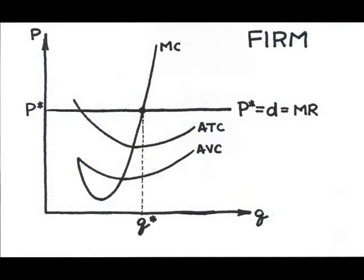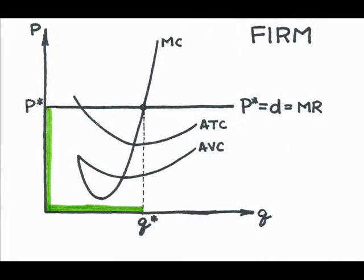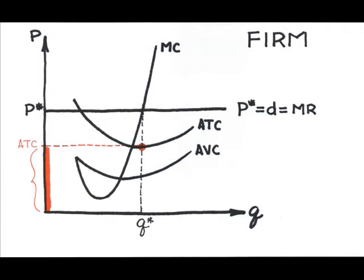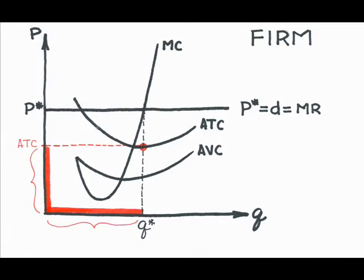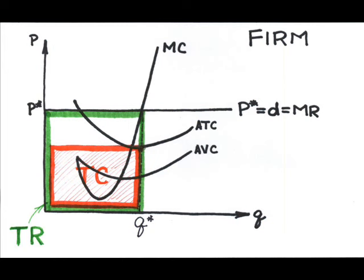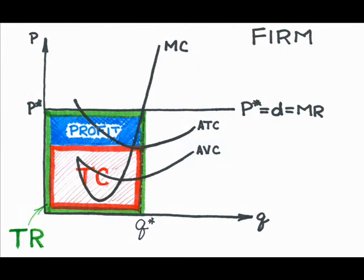At Q star, what is the total revenue coming in? Revenue is the price I can charge times the number of units that I sell. In this case, the green area. At Q star, what's the total cost of producing this output? It's the cost per unit, ATC, times the number of units that I sell. In this case, the red area. The amount of revenue, in green, that doesn't get chewed up by the costs, in red, is profit. In this case, I've indicated profit by the blue area.